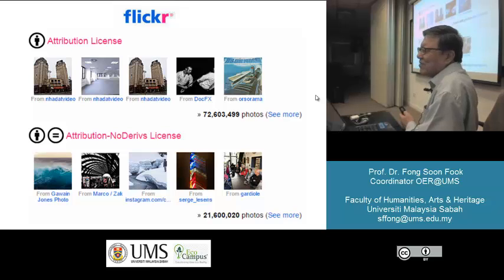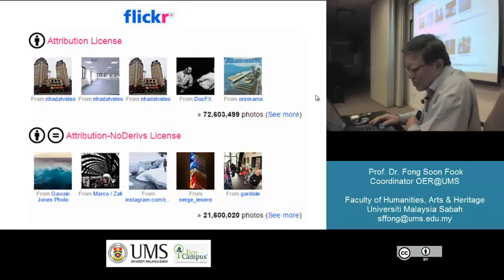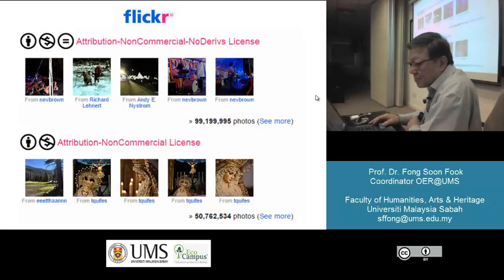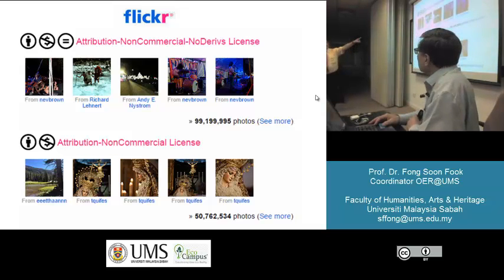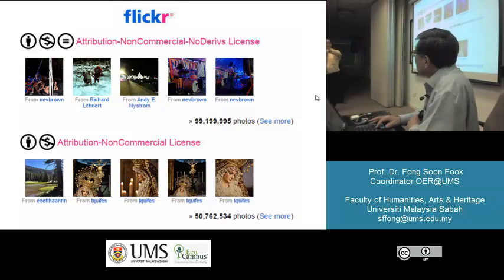Why in the world do millions of quality products get shared on Flickr free of charge? Your guess is as good as mine. Some of them are for the purpose of promoting their name, promoting the scientist, promoting the company, or promoting the photographer himself. In Flickr, under BY, there are over 72 million high quality photographs. Attribution and non-derivative license: 21 million. Non-commercial license: 50 million.